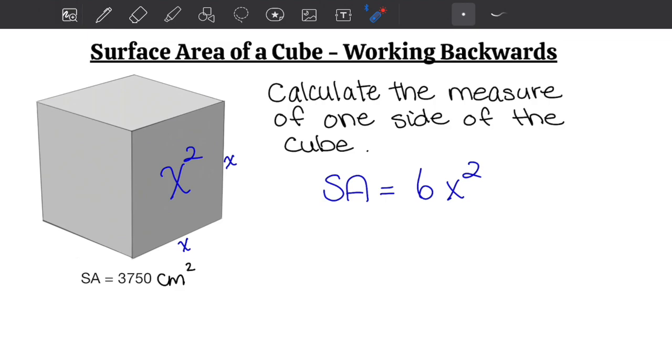The surface area of this entire cube is 3750 square centimeters. We're asked to calculate the measure of one side of the cube, so we just want x. What we're going to do is use some algebra to figure out what x is.